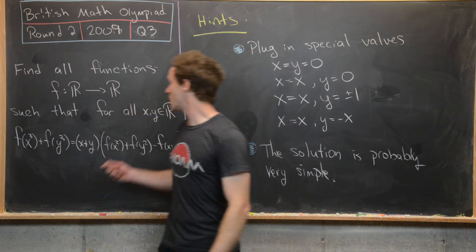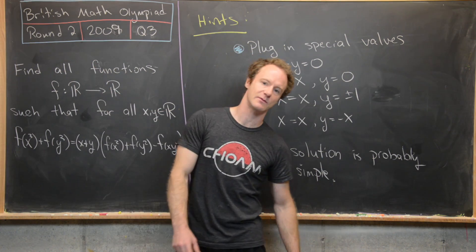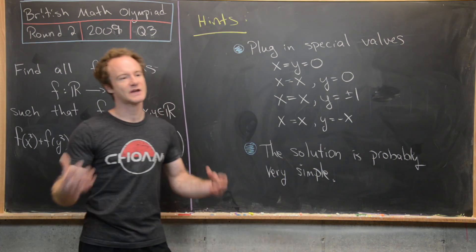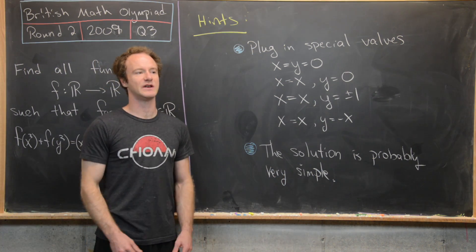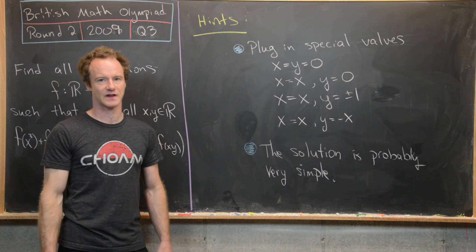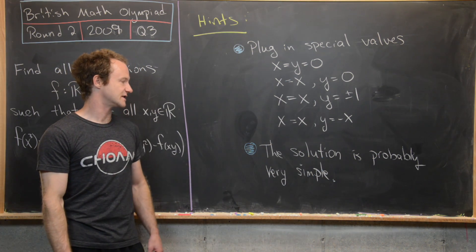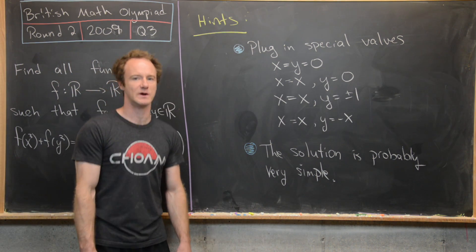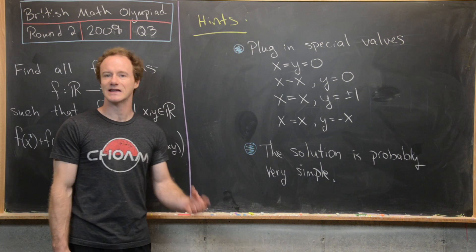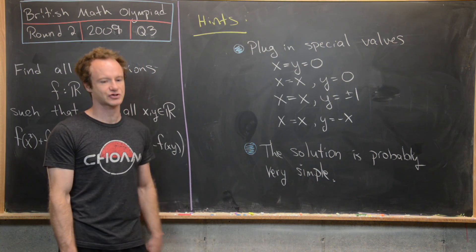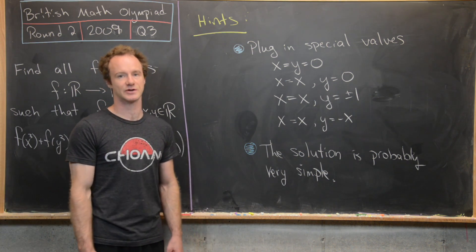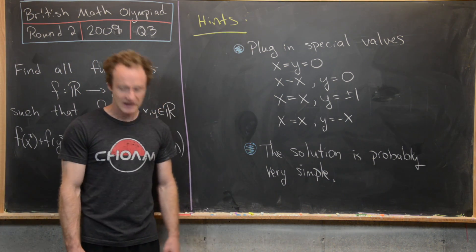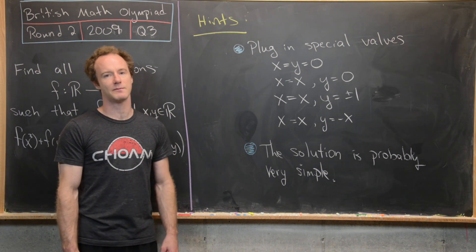Furthermore, since we're dealing with a function of real numbers, think about how you can use that to simplify things — something is true about the real numbers that would not be true about the rational numbers or integers. Also note that the solution is probably very simple, as is typical for functional equation problems — usually a linear, constant, or zero function. Give the problem a go with these hints and we'll come back with the solution.